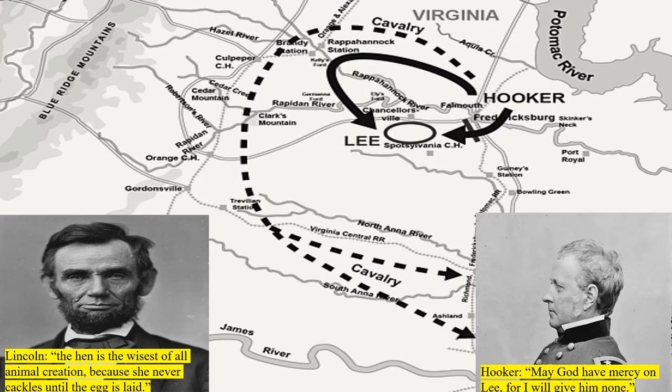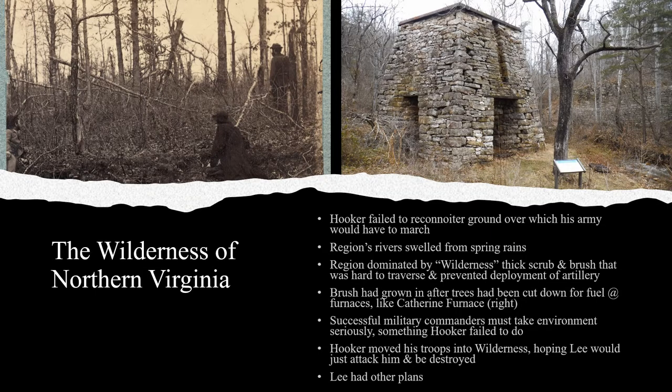Hooker planned a bold assault on Lee's army — using his cavalry to assault the Confederate rear, then enveloping and surrounding the Confederates with infantry and artillery. Hooker's Army of the Potomac was over 133,000 strong, outnumbering Lee two to one. Hooker declared that God should have mercy on Lee, for he would have none. Lincoln, somewhat skeptical, warned Hooker about his arrogance, saying 'The hen is the wisest of all animal creation, because she never cackles until the egg is laid.' Unfortunately for Hooker, spring rains swelled the rivers and flooded the roads of northern Virginia, delaying the deployment of his troops. Additionally, Hooker had not fully reconnoitered the grounds over which his army would move.